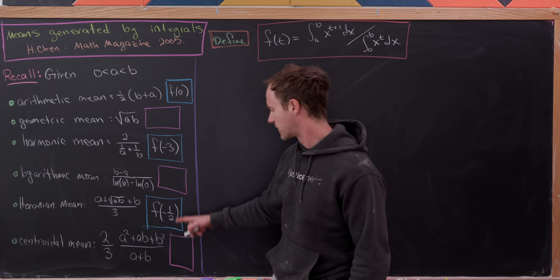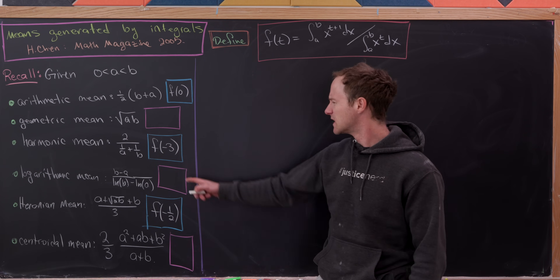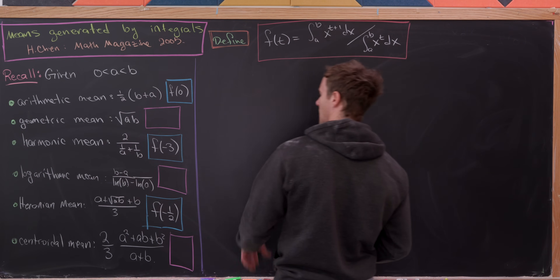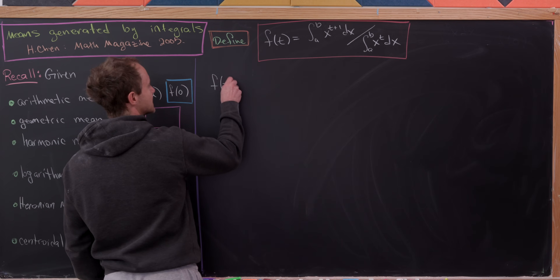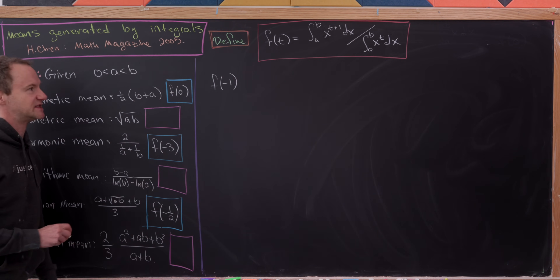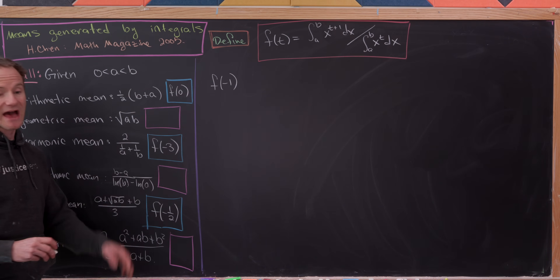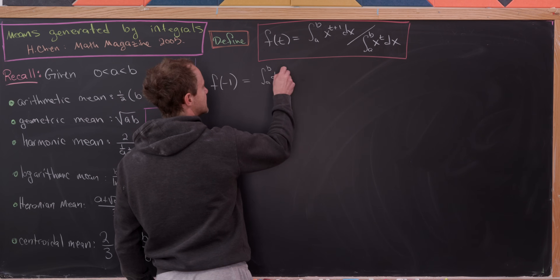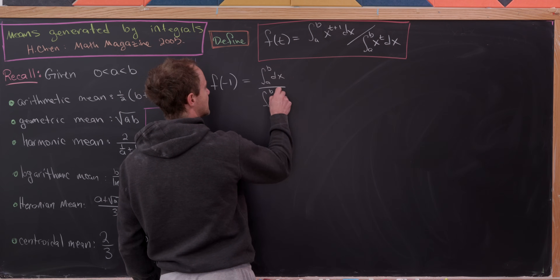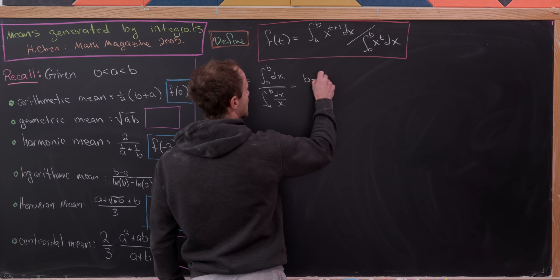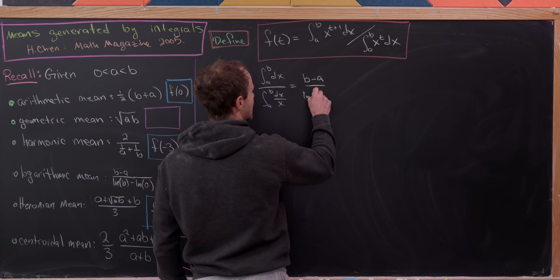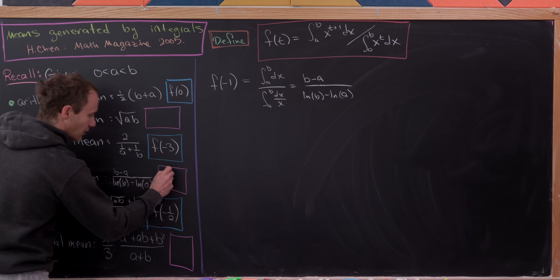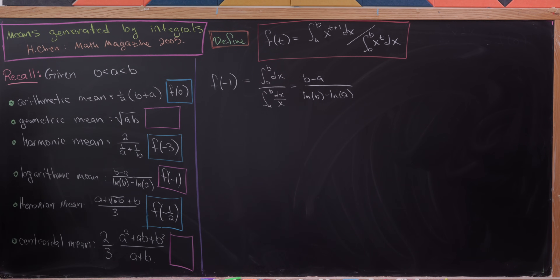Let's start with the logarithmic mean, which we can probably guess will be f(-1). Indeed: the integral from a to b of dx over the integral from a to b of dx/x very quickly becomes (b - a) over (ln b - ln a), which is exactly the logarithmic mean.